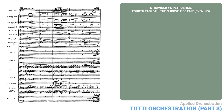Our next example comes from the fourth tableau, the Shrovetide Fair in the Evening. This is similar to music we just looked at, but here it's even more textural. There are no real leading lines. Again, this is meant to suggest the energy of a crowd. After all, an orchestra is, in a sense, a crowd of musicians. Let's listen.